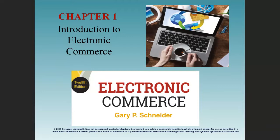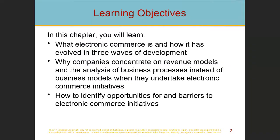If you haven't gotten this book yet, it's the twelfth edition of Gary P. Schneider's e-commerce — really an introduction to electronic commerce. In this chapter you'll learn what electronic commerce is and how it has evolved through the last three waves of development. We'll speak about how the internet evolved from the 90s to the early 2000s and now from 2010 to 2021, considered the third wave, really 2008 to 2021. We'll also speak about different opportunities you can get from e-commerce initiatives.